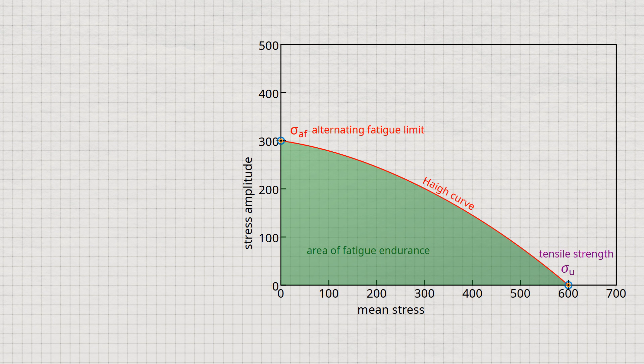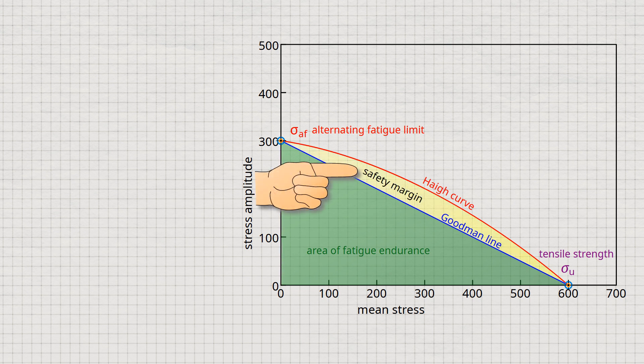Determining the Hay curve is relatively time-consuming in practice, since numerous tests would have to be carried out at different mean stresses. For every mean stress, countless tests with decreasing stress amplitude would have to be carried out to finally obtain the fatigue limit for a given mean stress. To simplify the determination of the area of fatigue endurance, the Hay curve is approximated by a straight line — the so-called Goodman line. This approximation results in a kind of natural safety margin, since the Goodman line runs below the actual Hay curve.